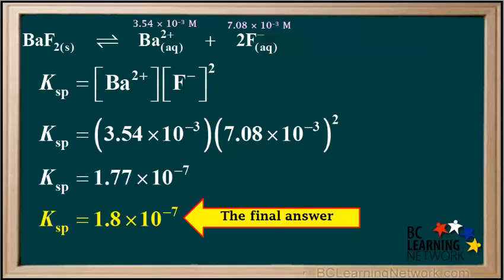So this is the final answer. Using the solubility data and a series of steps, we were able to determine that the Ksp for barium fluoride, at the temperature of the original saturated solution, is 1.8 × 10⁻⁷.